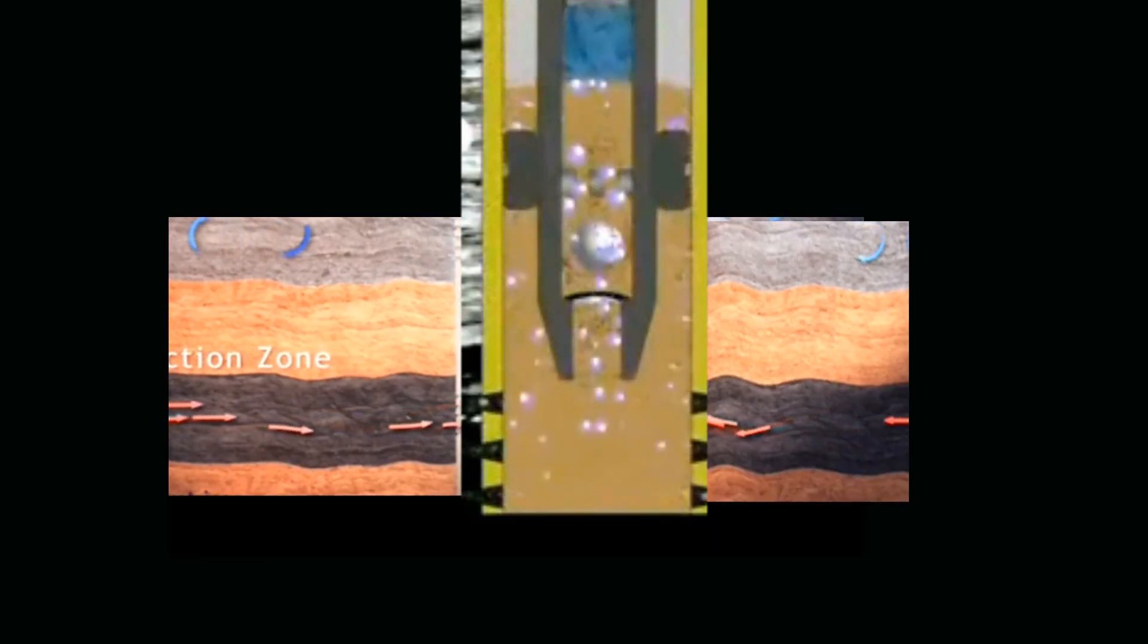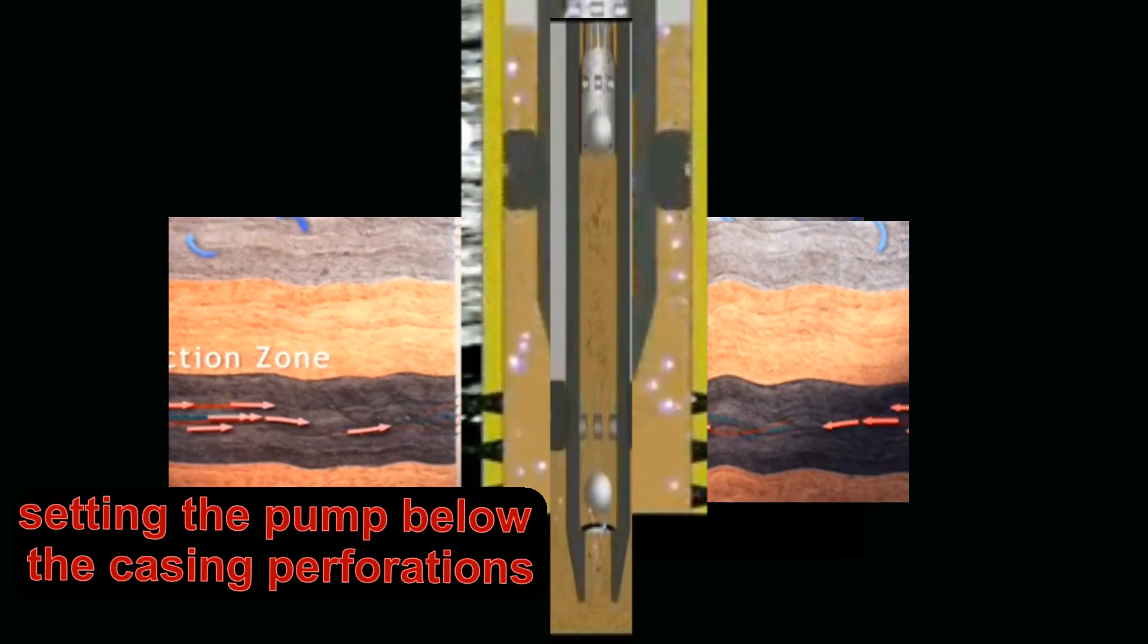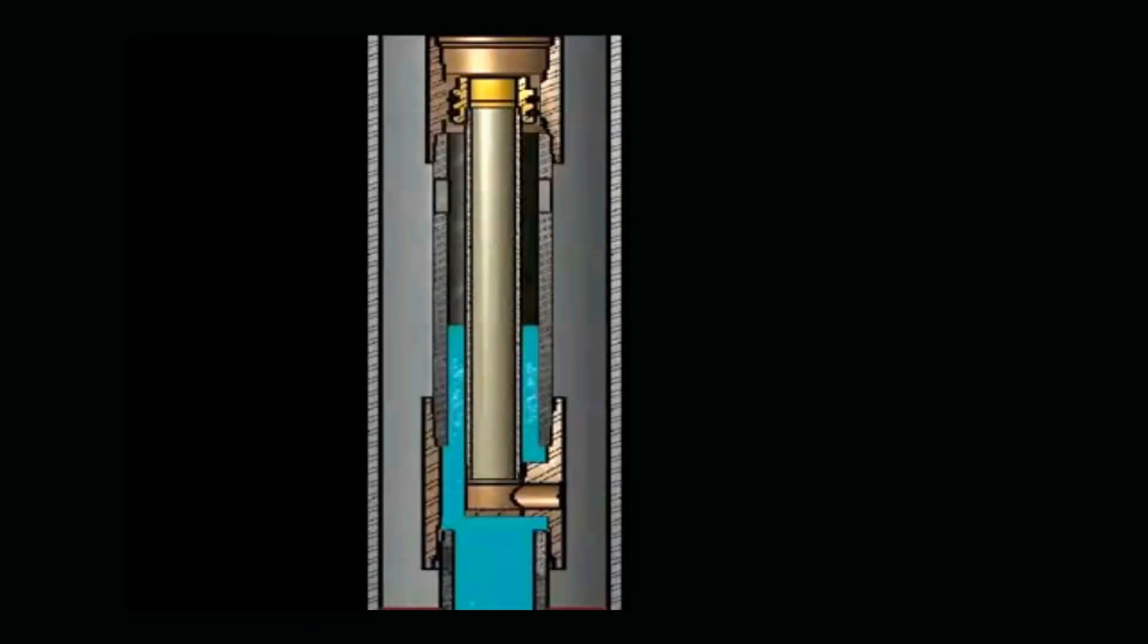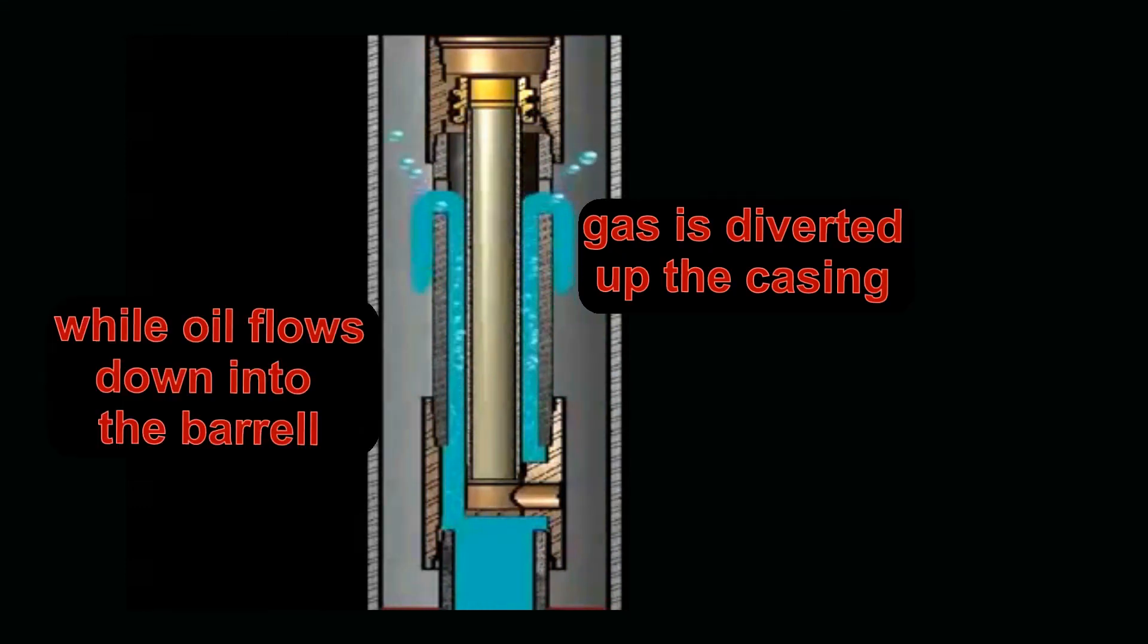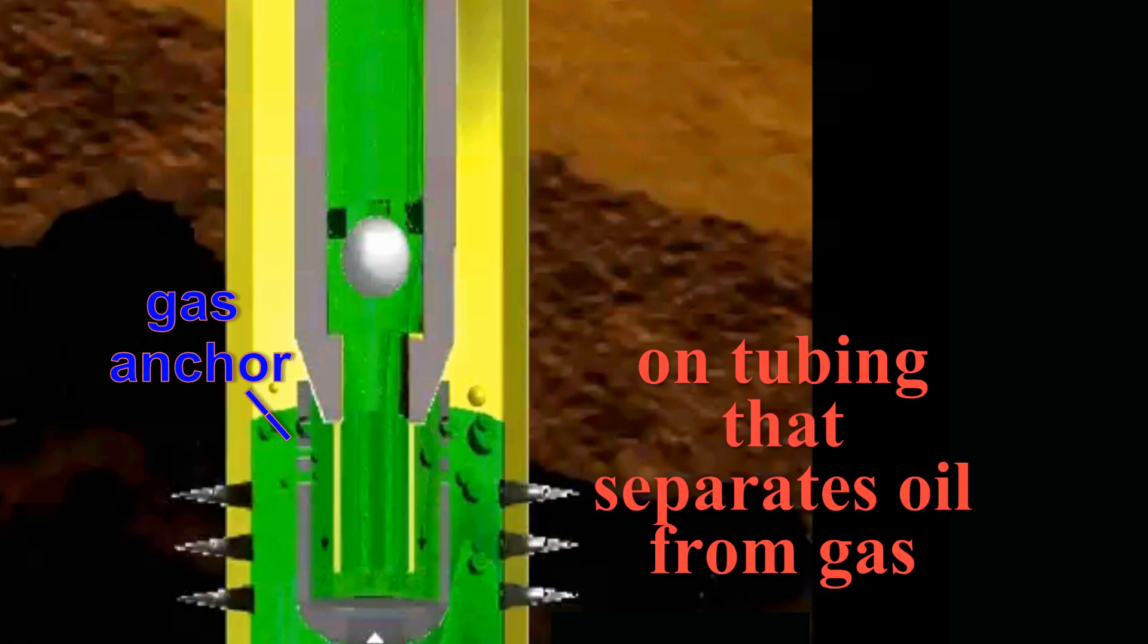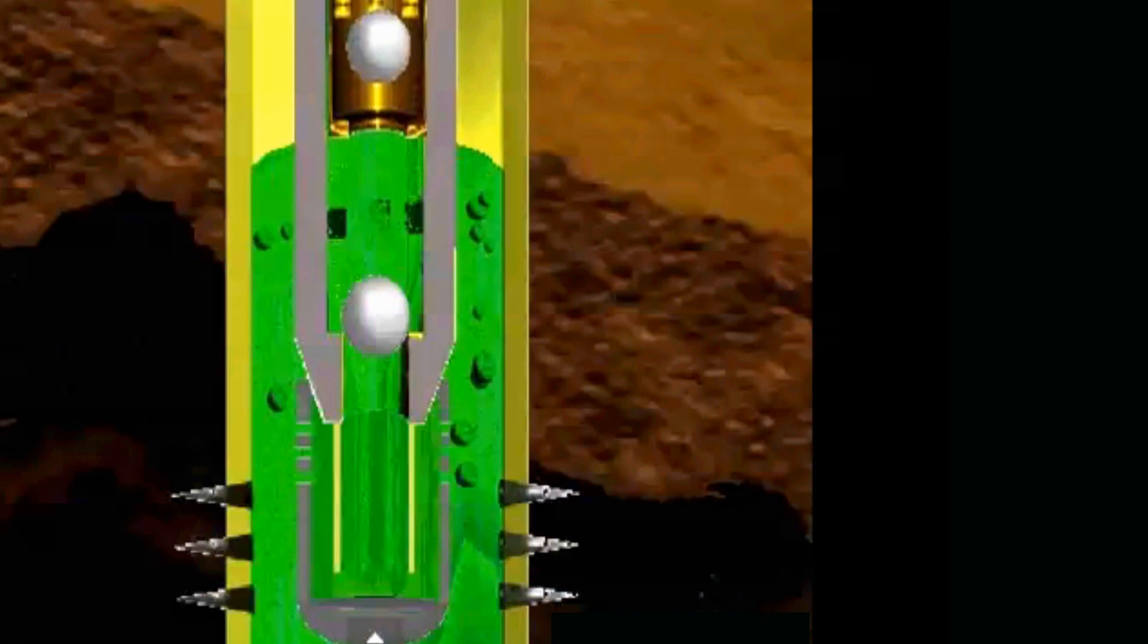Sometimes this gas compression can be prevented just by setting the pump below the casing perforations. This position fosters oil and gas separation, which in turn allows the gas to be diverted up the casing or tubing annulus while the oil flows down into the barrel. In addition, installing a gas anchor on the tubing that separates oil from gas can also divert the gas away from the tubing and up through the annulus.